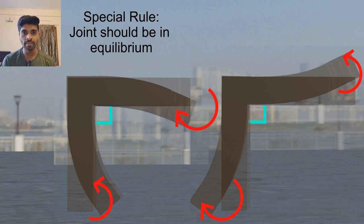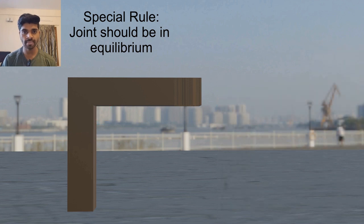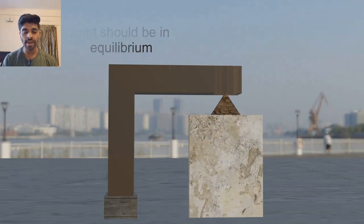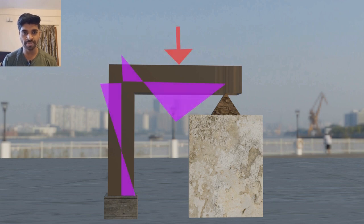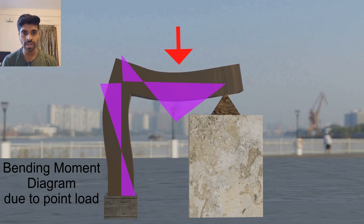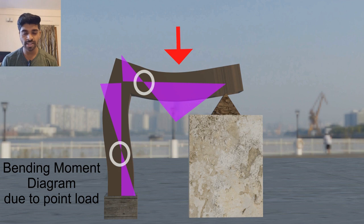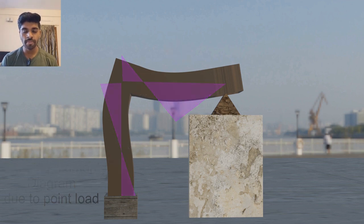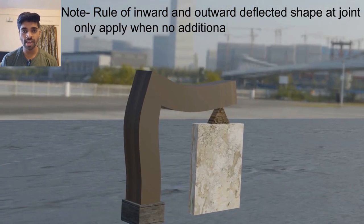In both cases we can find the bending moment diagram. As per the calculation, the bending moment diagram of this structure shows that both members will tend to move inwards from the joint portion. So this will be our final deflected shape of this structure. Here you will notice that we are getting two points of inflection, meaning we have two points where the bending moment diagram value is zero. Note that this special rule has to be followed only when there is no applied point moment at the joint.